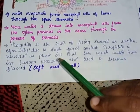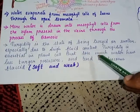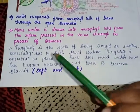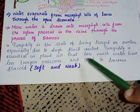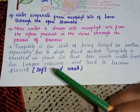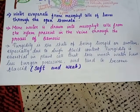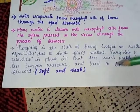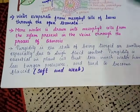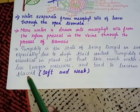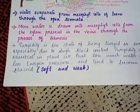Turgidity is essential in plant cells. When plant cells lose much water, they have less turgor pressure and tend to become flaccid. If water is lost, it becomes flaccid. What is meant by flaccid? Soft and weak.